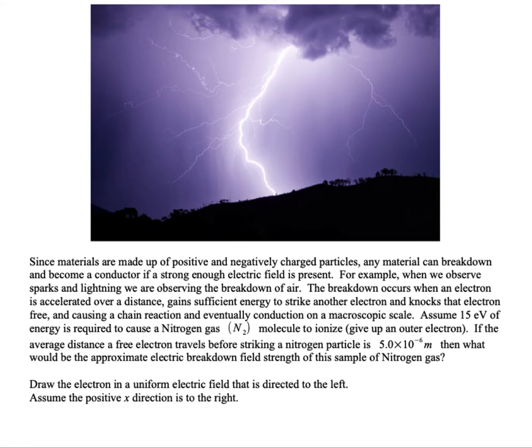And let's say the average distance that a free electron travels before striking another nitrogen particle is about 5 times 10 to the minus 6 meters. What must be the approximate electric field breakdown strength of this sample of nitrogen gas?